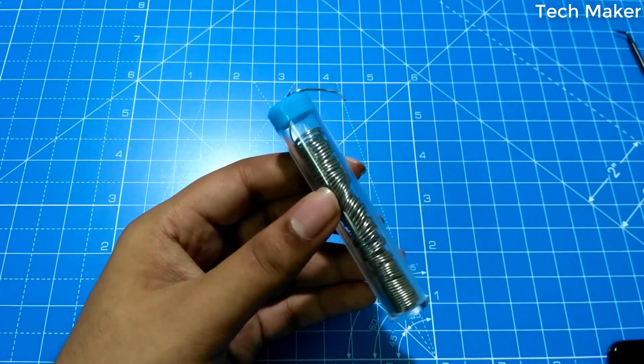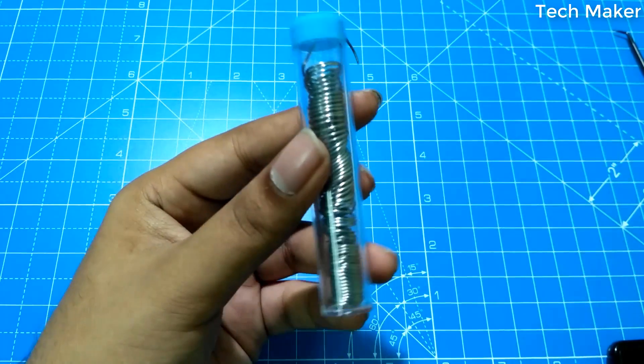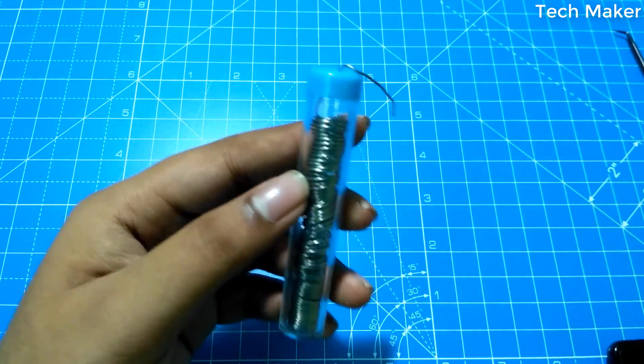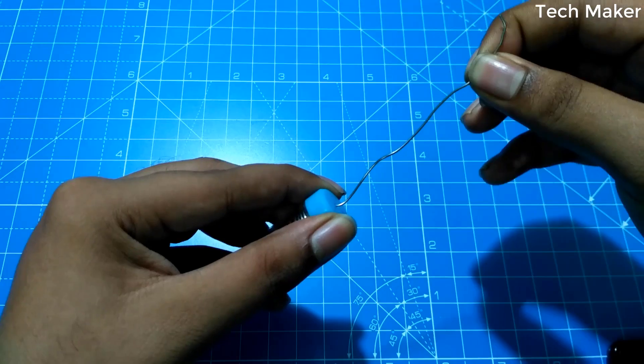And here you will get the one soldering tube. Here you can fill the soldering wire here. And when there is a need, you can dispense like this.